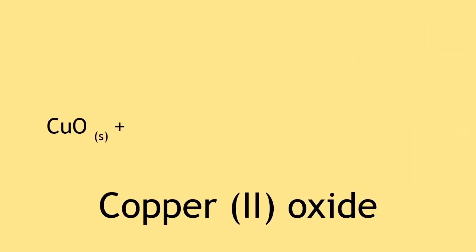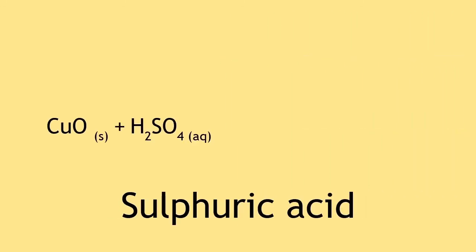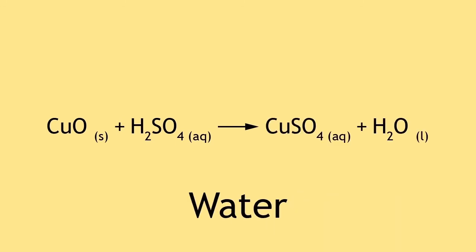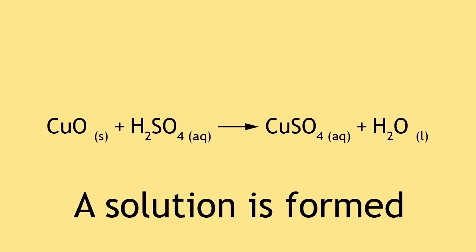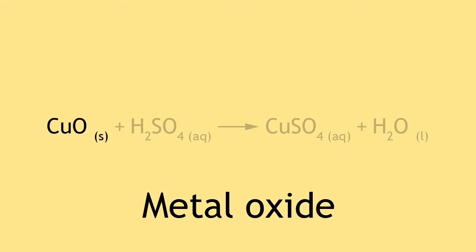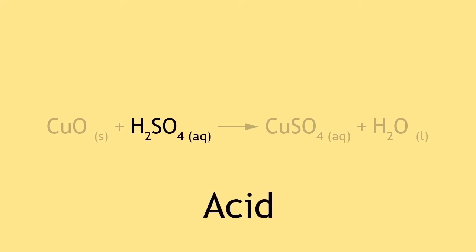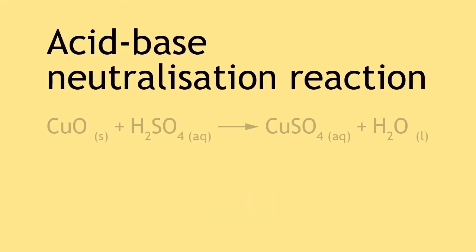Copper oxide reacted with sulfuric acid to give copper sulfate and water. As copper sulfate is soluble in water, a solution is formed. Copper oxide is a metal oxide, which is an insoluble base. And sulfuric acid is an acid. So what has happened here is an acid-base neutralization reaction where a salt and water has been formed.